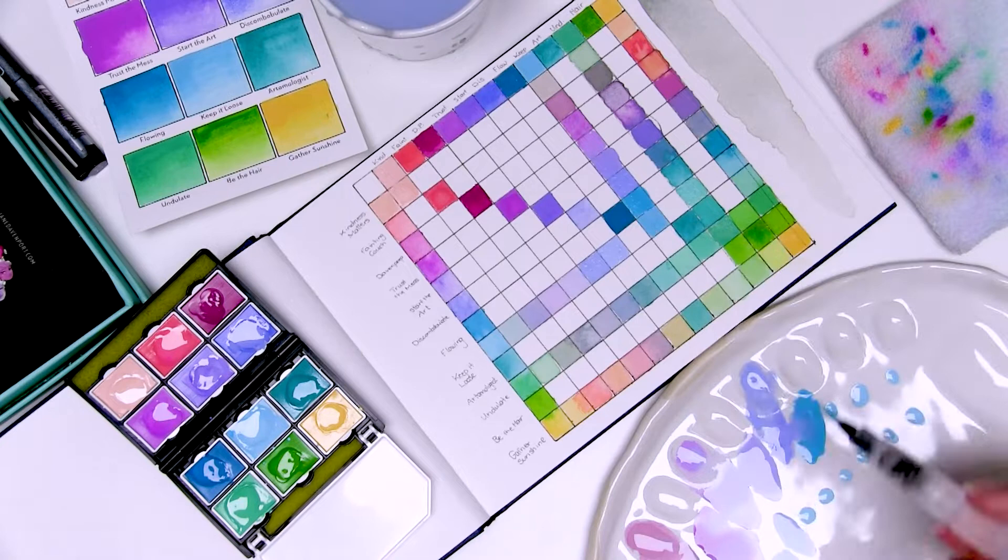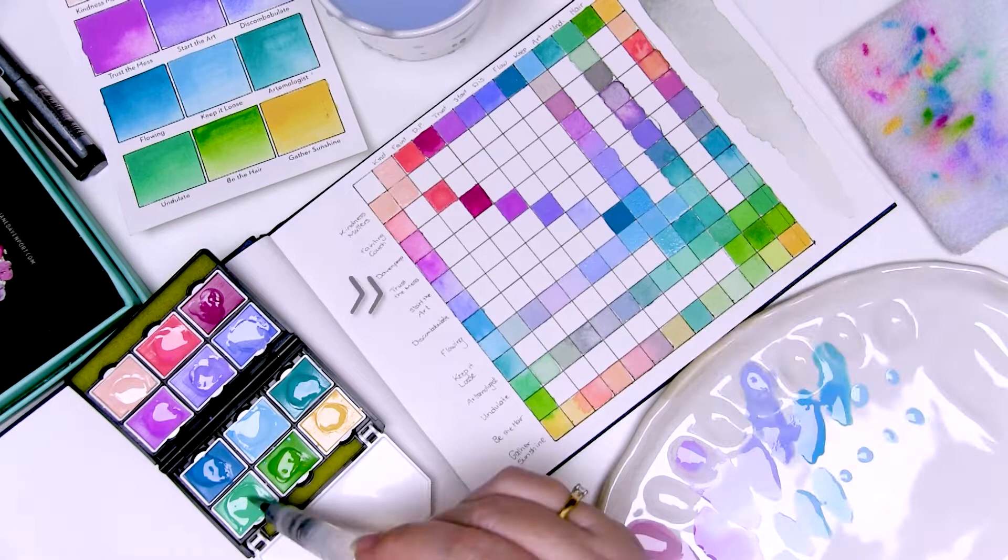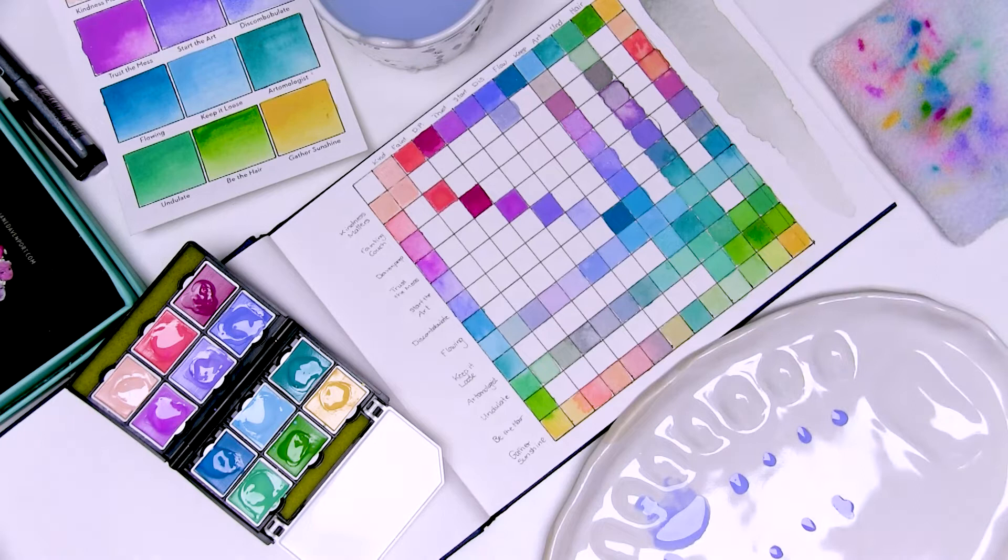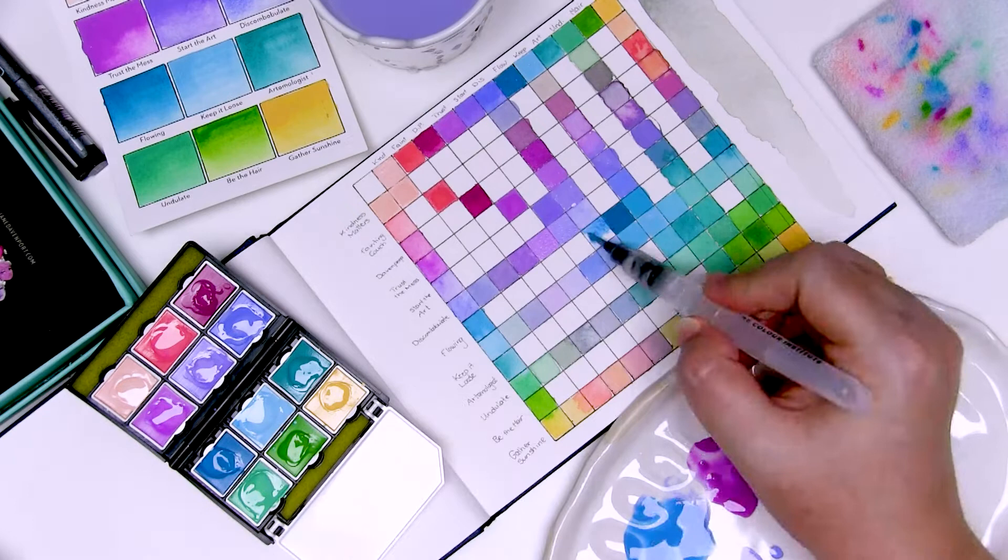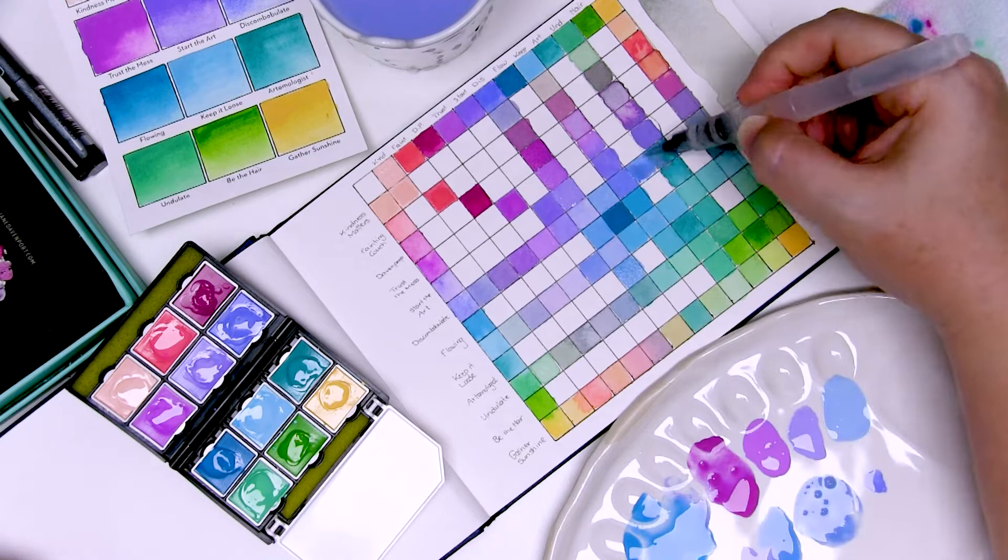If I move down, of course these are all the same colors, so if I move down to where I've got Trust the Mess on that row, when I get to where it meets with Fainting Couch, which of course are the same two colors, I'll make sure that Trust the Mess is the dominant color. So there's more of Trust the Mess in that mix. So you can go along each row and have a look and see what those two colors have created, and each of those colors will be different because you've mixed them in a different proportion.